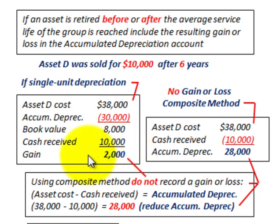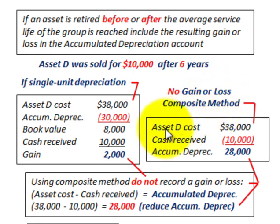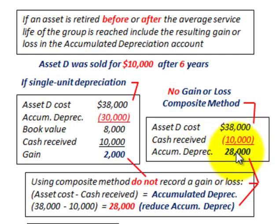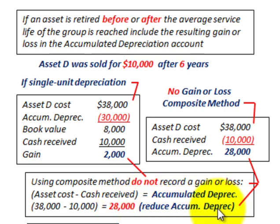With the composite method, we don't recognize any gains or losses. Instead, we take the asset's cost of $38,000 less the cash received of $10,000, and the difference of $28,000 goes to accumulated depreciation. To review: using the composite method, do not record any gain or loss. Take the asset's cost, compare it to the cash received, and the difference reduces accumulated depreciation — in this case $28,000.